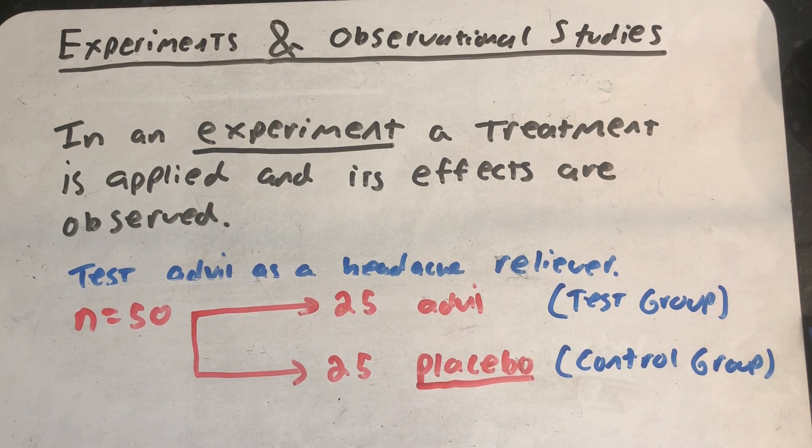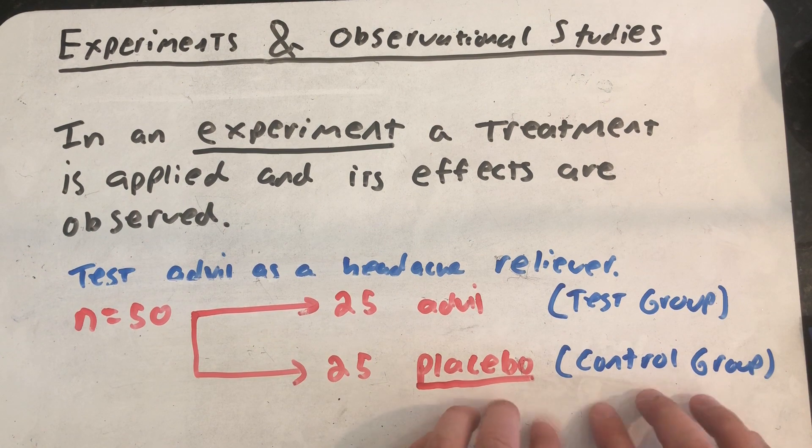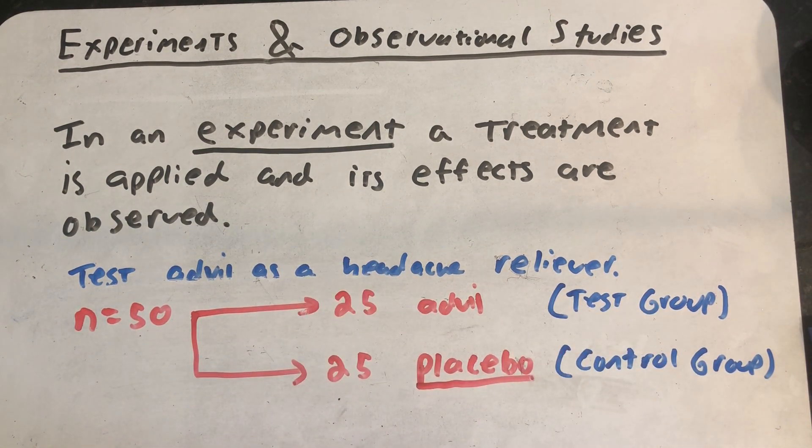All right, so that's an experiment. We apply a treatment to at least some of the participants. And then sometimes we might have a control group where we're using them to measure the effects. We know what happens in the general population.